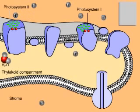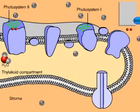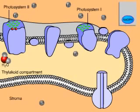Energized electrons from photosystem 1 are passed down an electron transport chain and added to NADP+ to form NADPH. Meanwhile, energized electrons from photosystem 2 are passed through another electron transport chain.